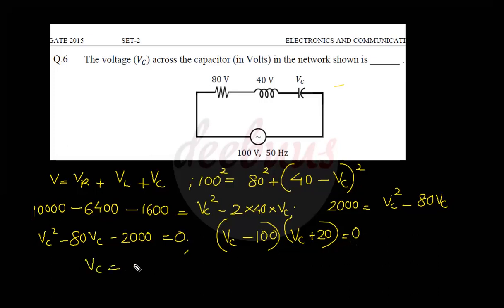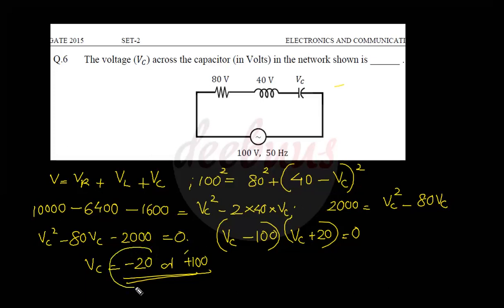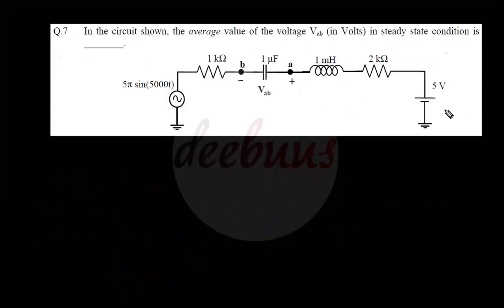Factoring: (VC minus 100)(VC plus 20) equals 0, so VC equals 100 or VC equals minus 20. Since capacitor voltage equals minus j divided by (ωC) times I, it must be negative. Therefore the capacitor voltage is minus 20 volts.